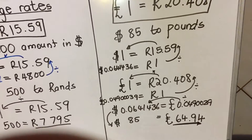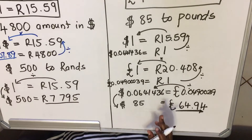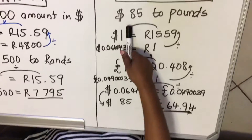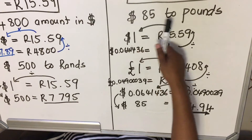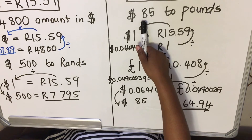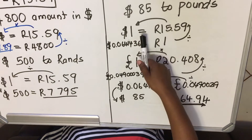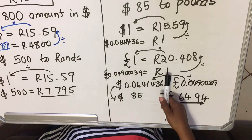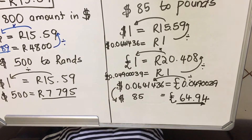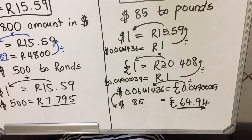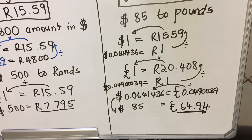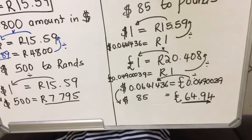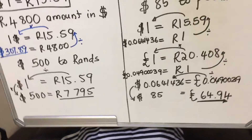This method works every time. In this question you weren't given a direct ratio from dollars to pounds, so you first let both currencies be equal to one rand, then equated them, and got your answer. The method of starting from the left — divide first, then multiply — works every time, and I find it's not that difficult. Thank you for watching. This is the end of our lesson.